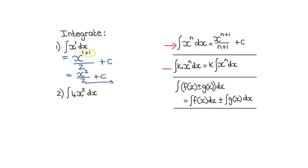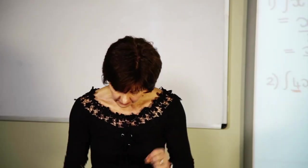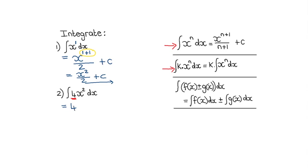The second example: integrate 4x². Here I use Rule 2 — the constant 4 stays. I integrate x² using Rule 1: write down x², add 1 to get x³, divide by the new exponent 3, remember plus a constant. Simplified: 4x³/3 + C.